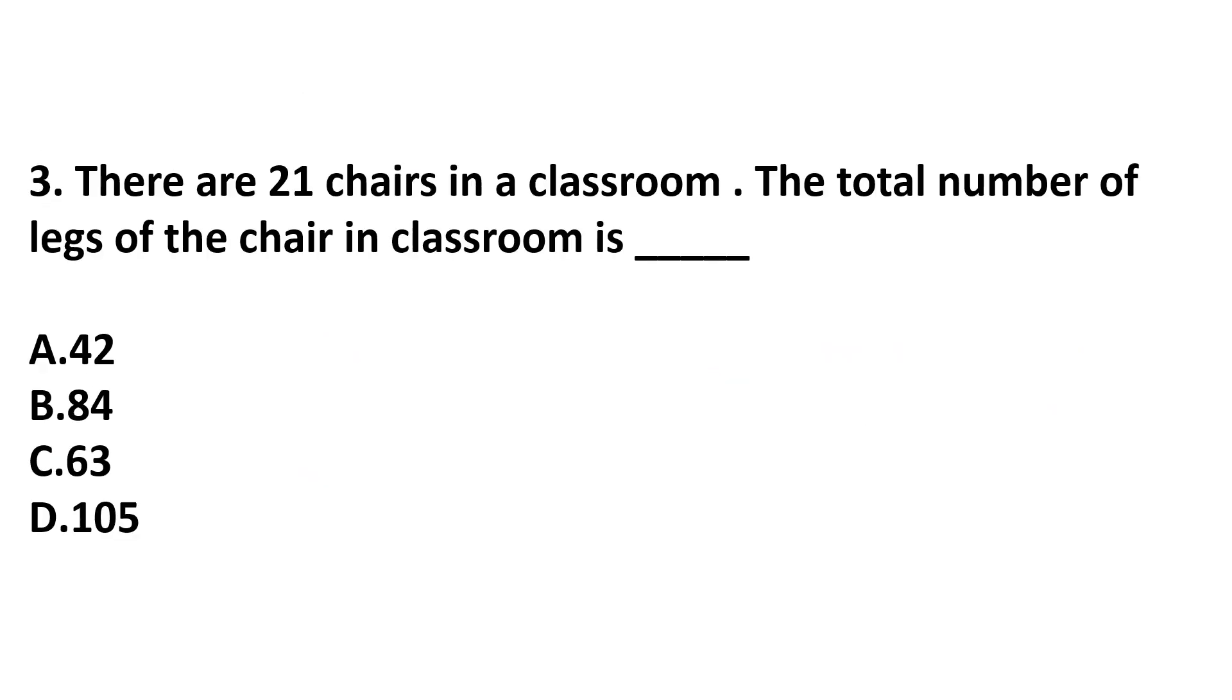There are 21 chairs in a classroom. The total number of legs of the chair in a classroom is... There are 21 chairs and we know that each chair has 4 legs. So total number of legs are 21 multiplied by 4. That is 4 ones are 4 and 4 twos are 8. So total number of legs are 84. Answer is option B.